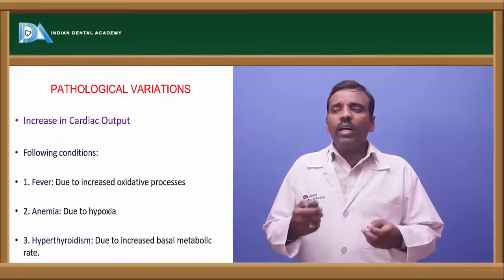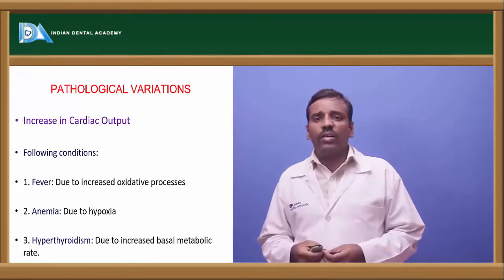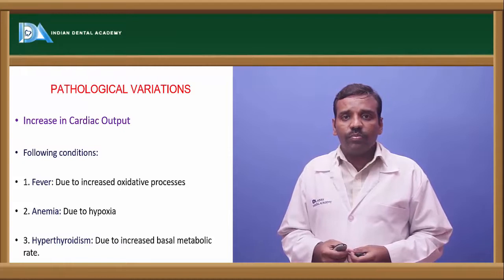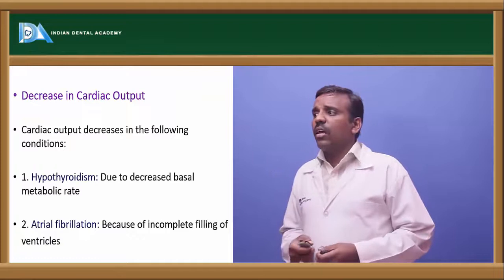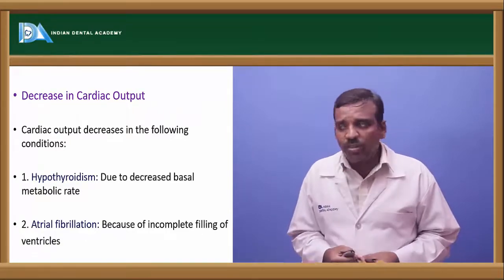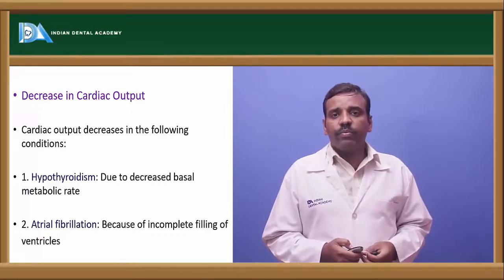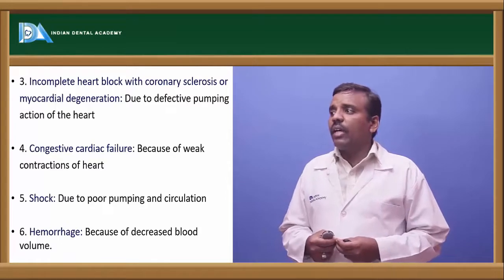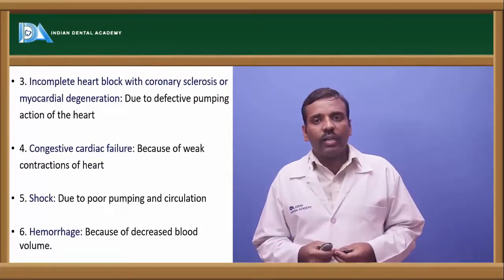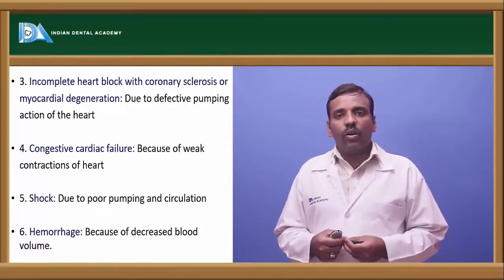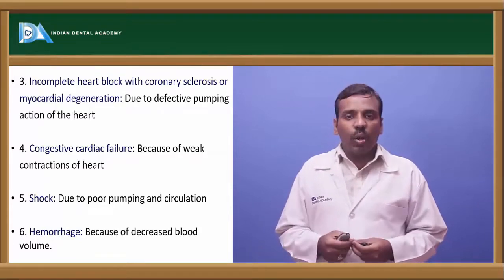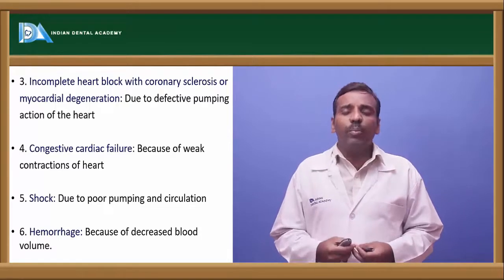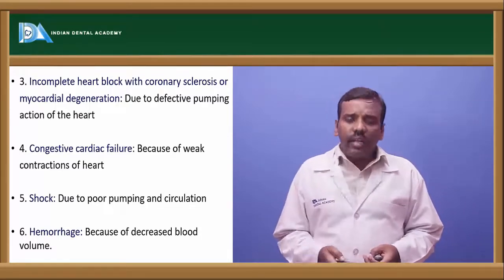Pathological variations: cardiac output is increased in fever, anemia, and hyperthyroidism. It is decreased in hypothyroidism, atrial fibrillation, incomplete heart block, congestive cardiac failure (due to weak contractions), circulatory shock, and hemorrhage (due to hypovolemia causing blood loss).